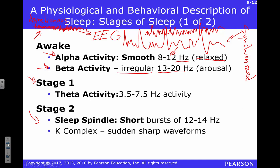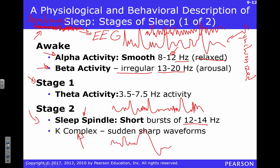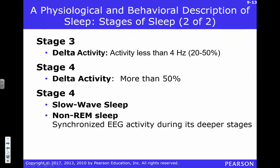From there we move into stage two. Stage two has a couple of interesting features. One is called a sleep spindle — you get a rapid burst of activity even though you're moving along slowly. You also have something called a K complex — a big slow wave that fits in. We're trying to lean into slow wave sleep, because we have some business to take care of there.